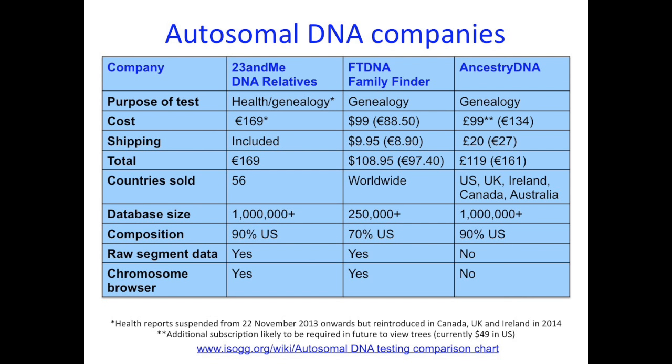The databases are all very different sizes. Family Tree DNA have been offering their autosomal DNA test for about three or four years. AncestryDNA have a massive database of one million people, but it is about 95% in America. Family Tree DNA have a smaller database but it's a better one for people in the UK and Ireland, and they also have tools the other companies don't offer — such as raw segment data and a chromosome browser. If you're adopted or dealing with an illegitimacy, it's best to be in all the databases. If you test with Ancestry, you can transfer your results to Family Tree DNA for free, though there's a $39 fee to unlock the matches.